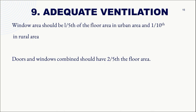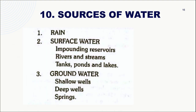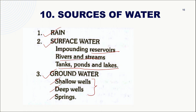For adequate ventilation, window area should be at least one-fifth of the floor area in urban areas and one-tenth in rural areas. Doors and windows combined should be two-fifths of the floor area. Regarding water sources, types include rain or surface water from impounding reservoirs, rivers, streams, tanks, ponds, and lakes, as well as groundwater from shallow wells, deep wells, and springs. The most commonly used sources are shallow or deep wells.